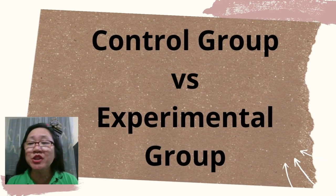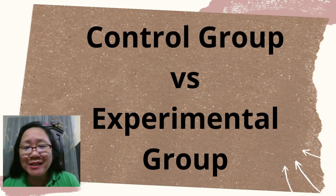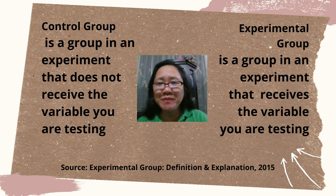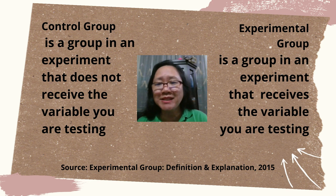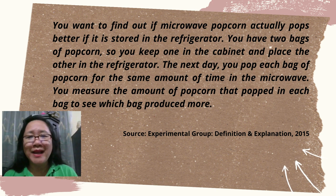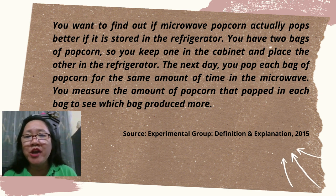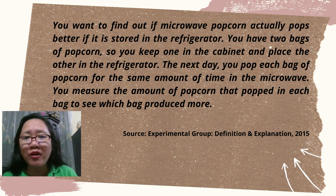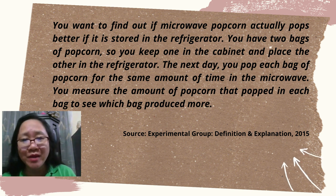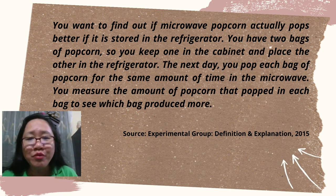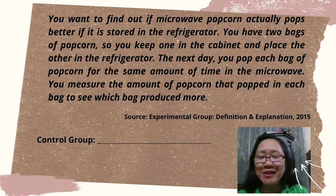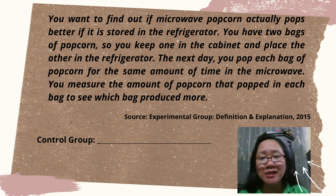Now let us discuss the difference between control group and experimental group. Control group is a group in an experiment that does not receive the variable you are testing, while experimental group is a group that receives the variable that you are testing. For example: you want to find out if microwave popcorn actually pops better if it is stored in the refrigerator. You have two bags of popcorn — you keep one in the cabinet and place the other in the refrigerator. The next day, you pop each bag for the same amount of time in the microwave and measure the amount of popcorn that popped.